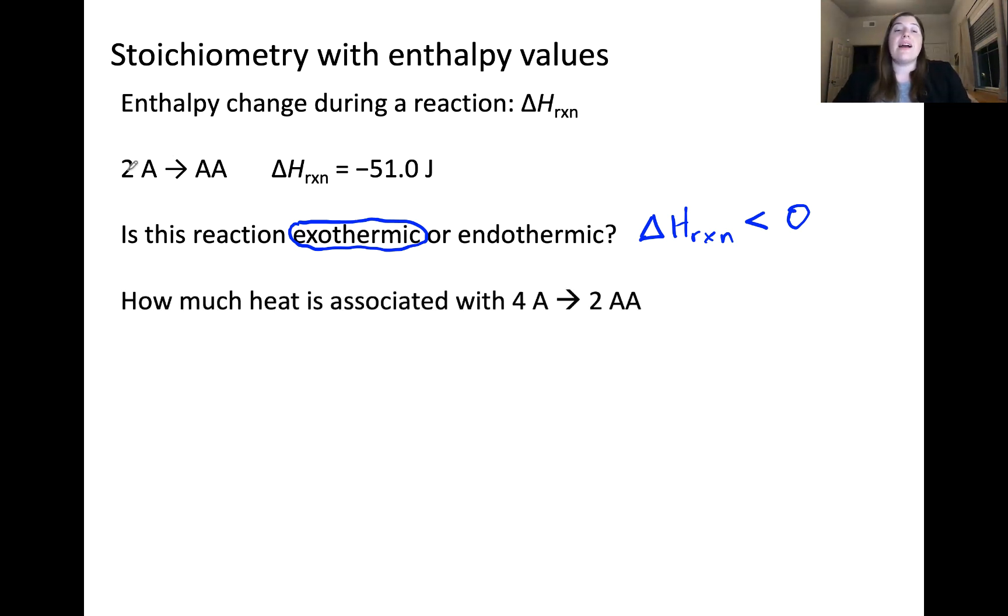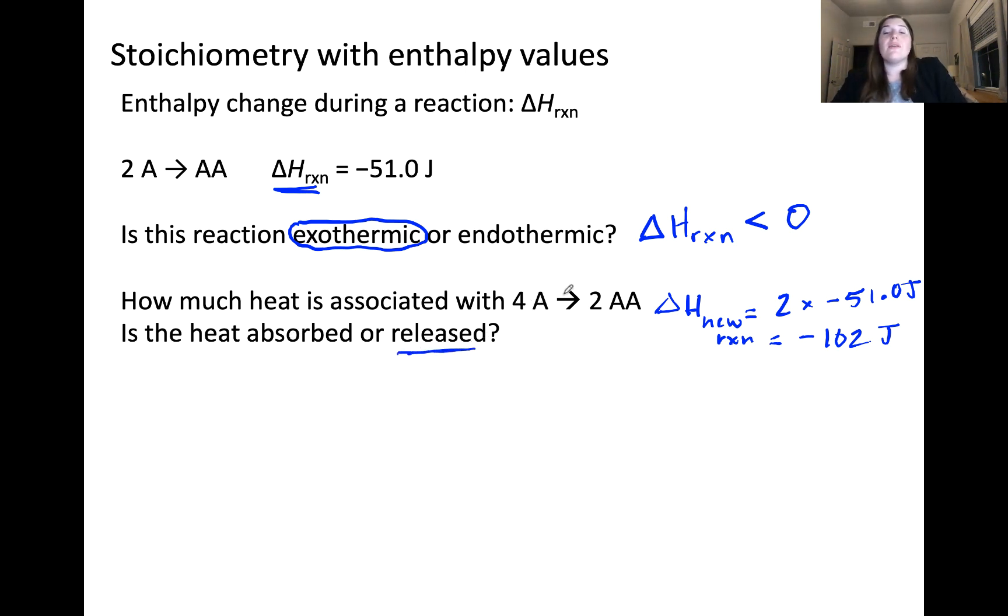Now, what if instead of reacting 2 moles of A to generate 1 mole of AA, we react 4 moles of A to generate 2 moles of AA. In other words, doubling the reaction. In this case, what we'll need to do is take our delta H value shown here and multiply by 2. So, delta H of this new reaction will equal 2 times negative 51.0 joules, otherwise known as negative 102 joules. Heat in this case is still being released because we're still going from A to AA as shown in the original reaction.